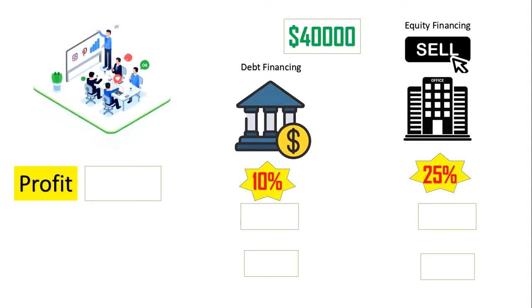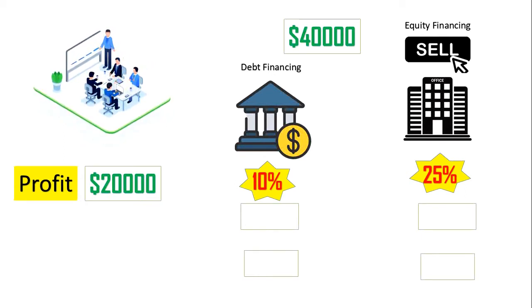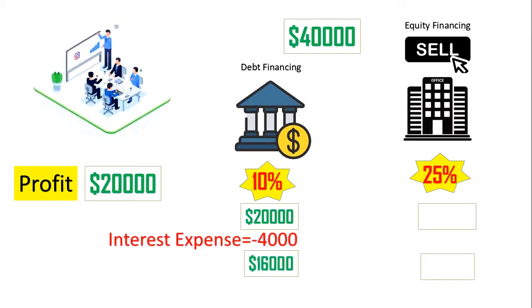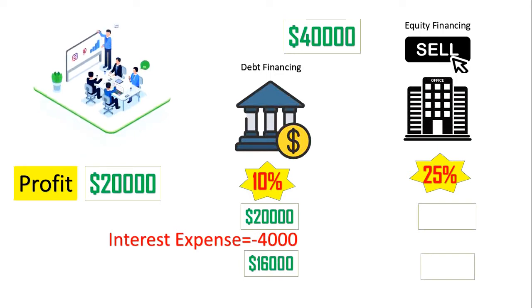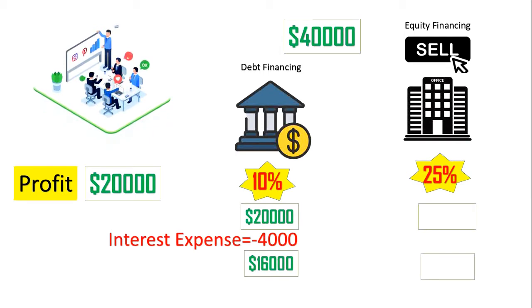Suppose your business earns a $20,000 profit during the next year. If you took the bank loan, your interest expense would be $4,000 — and here's an important point: do not calculate 10% on the $20,000 profit. You calculate 10% on the $40,000 loan, which gives you $4,000. Deducting that from your $20,000 profit leaves you with $16,000.